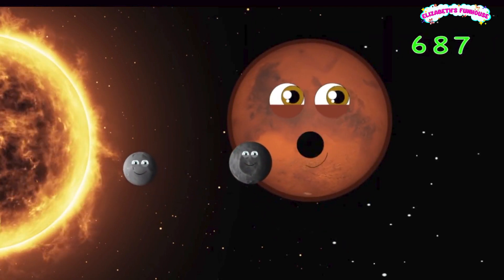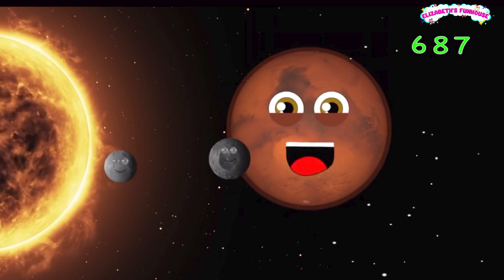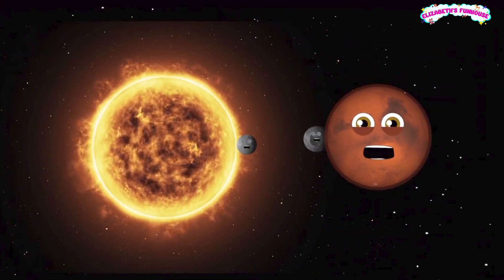687 is the amount of days it takes to orbit the sun for my year to take place.